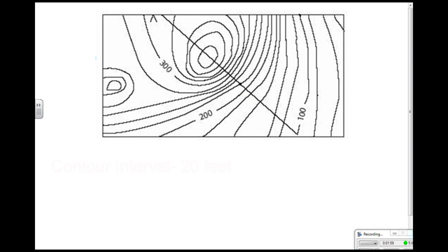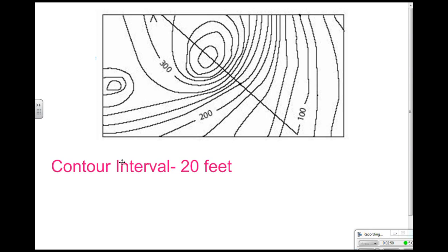Let's look at another example and see if we can interpret it. The first thing I want to do is look at the contour lines to figure out the contour interval. This line has an elevation of 100 and this line has an elevation of 200. To find the contour interval, I subtract: 200 minus 100 gives me 100. Then I count the contour lines in between: one, two, three, four, five lines. So I take 100 divided by 5, which gives me 20 — the contour interval is 20 feet.